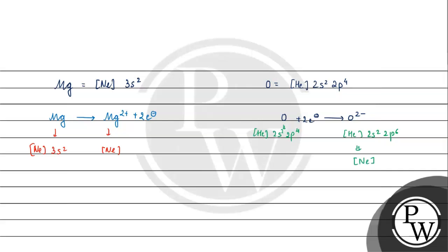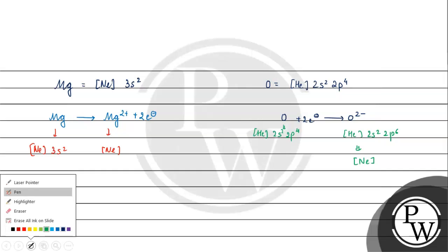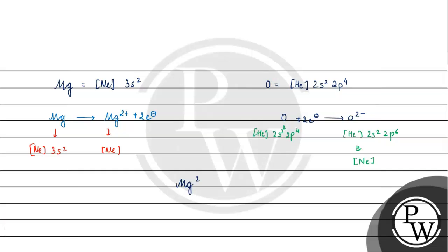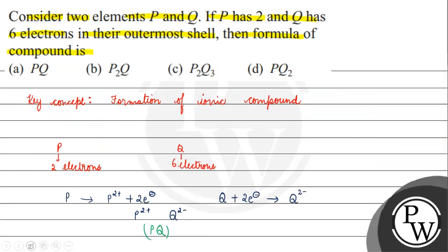If we have Mg²⁺ and O²⁻ and combine them, we get MgO. Coming back to the question: P has two and Q has six electrons in their outer shell. The correct answer is Option A, PQ, because the charges are equal — P becomes +2 and Q becomes −2.